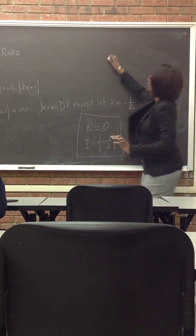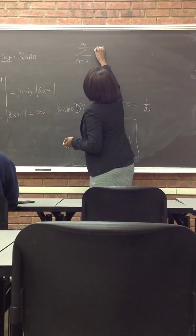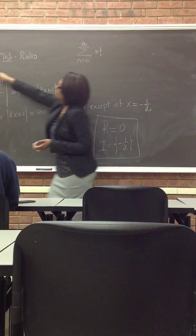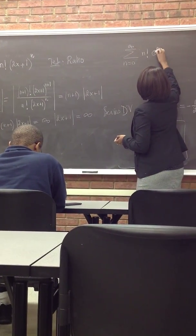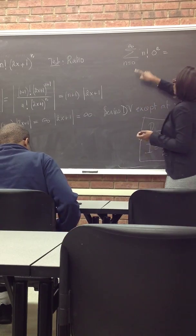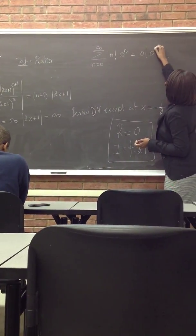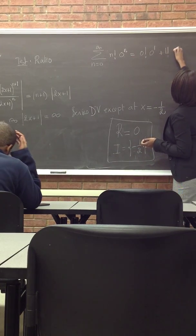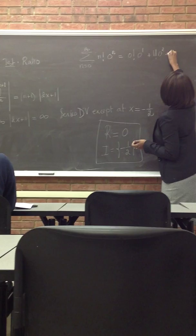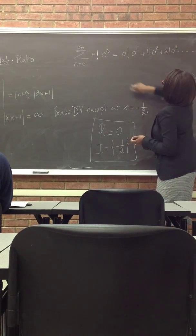And let's look at what value it converges to at the center. If I take summation n equals 0 to infinity, n factorial times (2x+1)^n - if I plug in minus 1/2, this becomes 0 to the power n. So when n equals 0, what do I have? 0 factorial times 0 to the power 0. When n equals 1, I'll have 1 factorial times 0 to the power 1, and so forth, 2 factorial times 0 to the power 2.